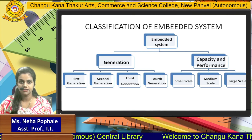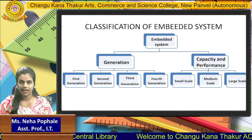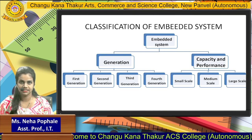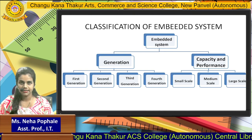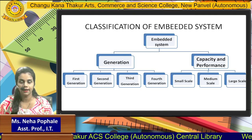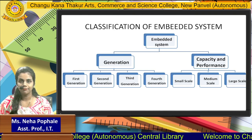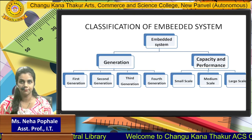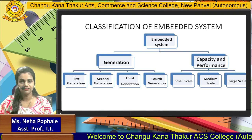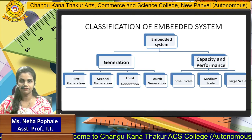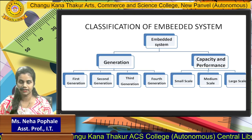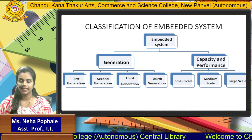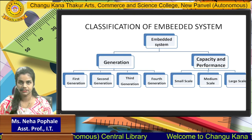For medium scale Embedded Systems, the circuit connection is slightly more difficult than small scale but not as complex as large scale. It is understandable but requires expert opinion. The performance needs to be critical, though a delay of a few seconds may be tolerable. Examples include ATM machines, smart ACs, and refrigerators.